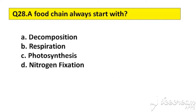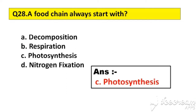Question number 28. A food chain always starts with. Option A: Decomposition. B: Respiration. C: Photosynthesis. D: Nitrogen fixation. The right answer is option C, Photosynthesis.